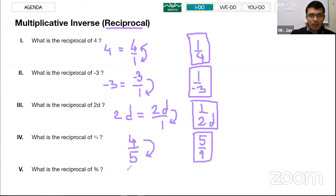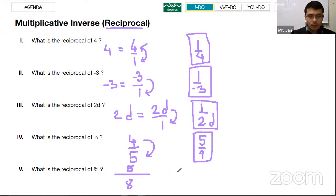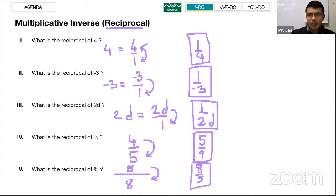One more example: 5 over 8. When you flip it, the reciprocal becomes 8 over 5. This is the second skill you'll practice today on your IXL — finding the multiplicative inverse, which is flipping the numbers. The easiest way to remember reciprocal is: it's just flipping the numbers.